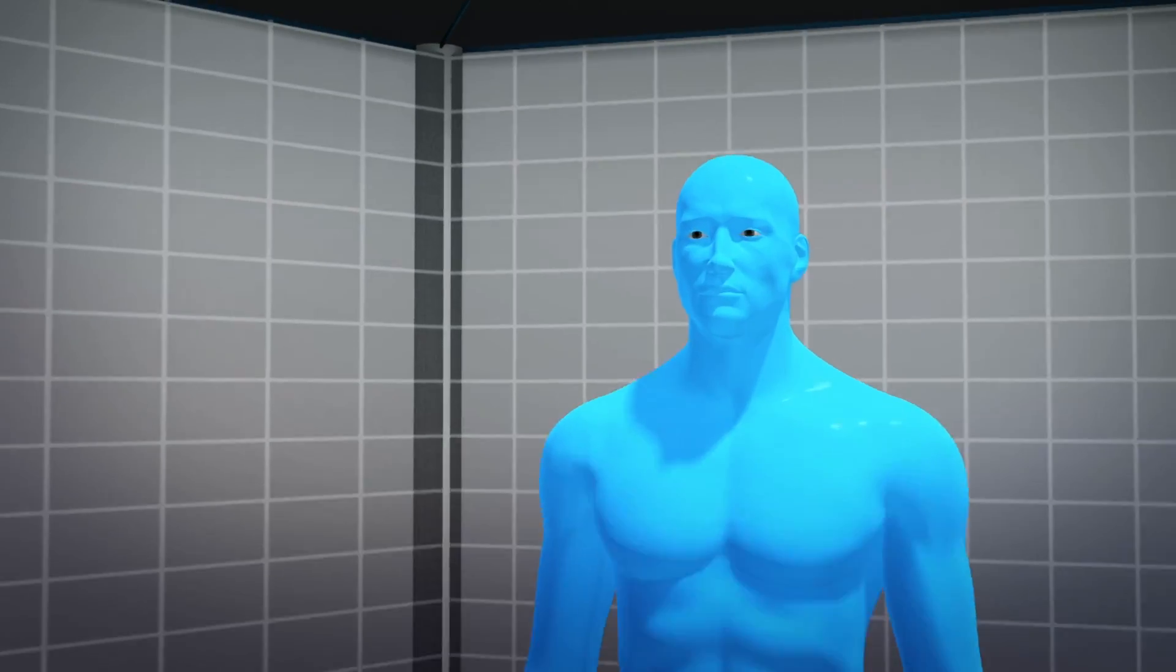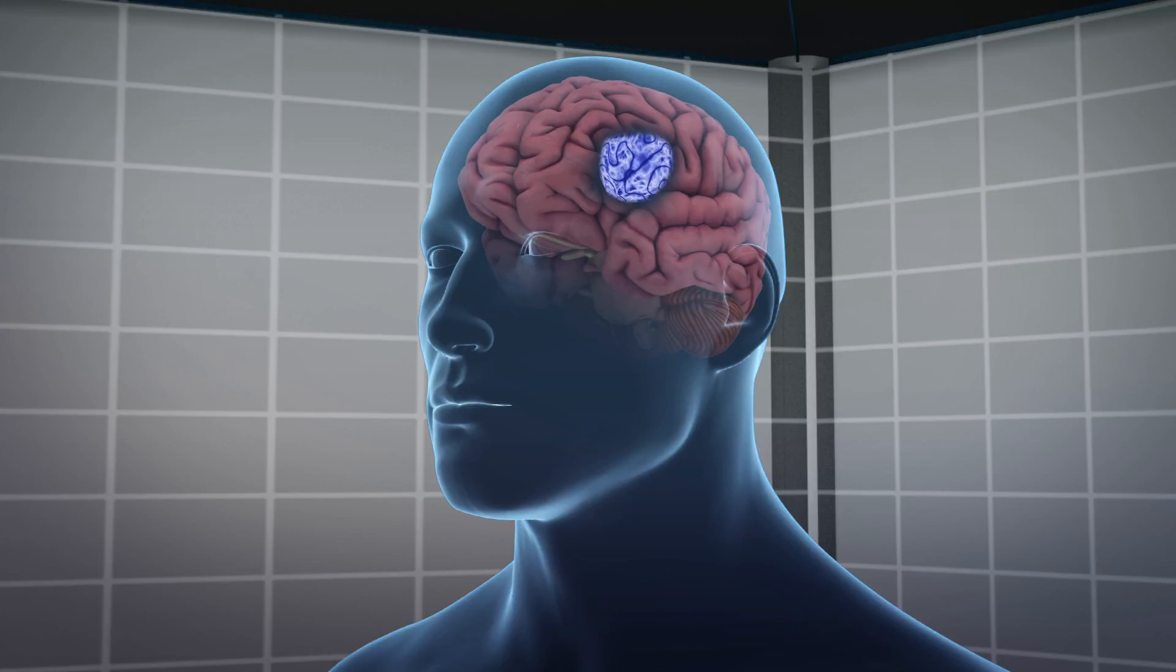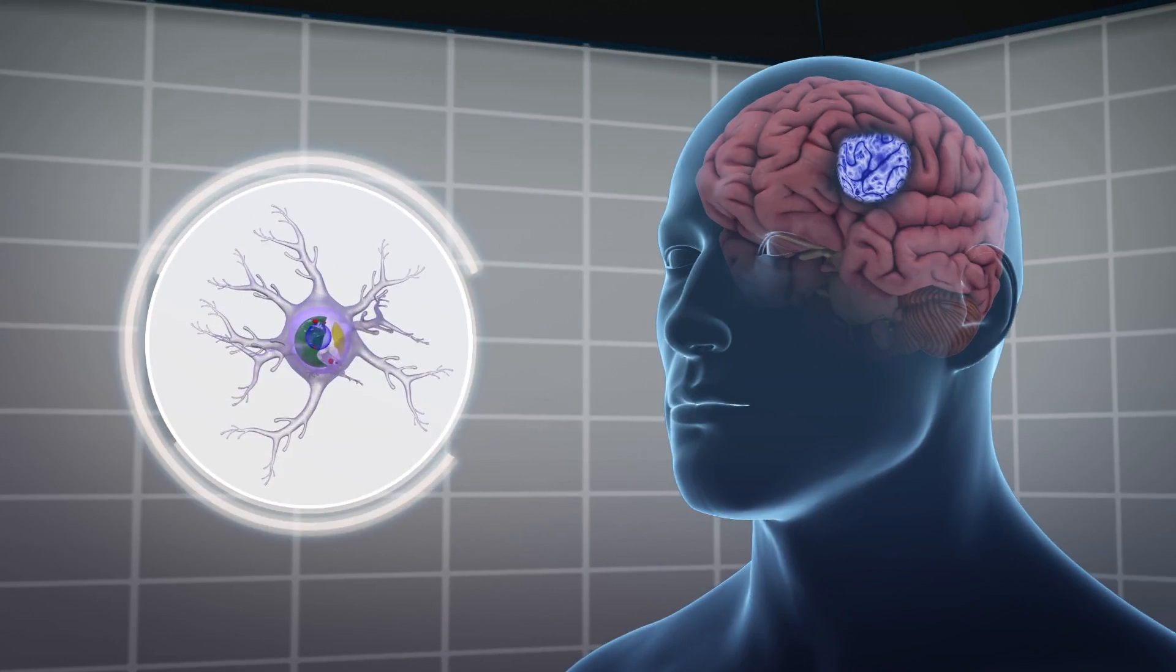According to the American Brain Tumor Association, glioblastomas are brain tumors that appear in astrocytes, star-shaped cells that make up the supportive tissue of the brain.